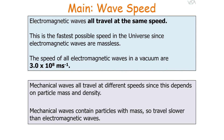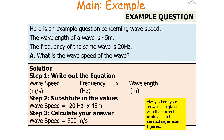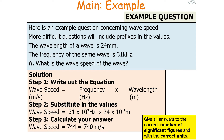Let's look at an example question on wave speed. The wavelength of a wave is 45 meters and the frequency is 20 hertz — what is the speed of the wave? You write out your equation: wave speed equals frequency times wavelength. Substituting the values: 20 hertz times 45 meters gives a final answer of 900 meters per second, with the correct units and correct number of significant figures.